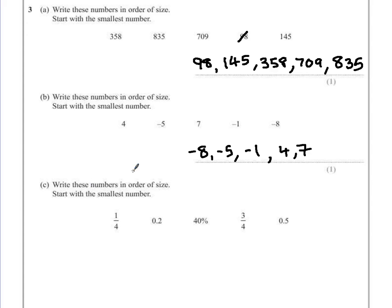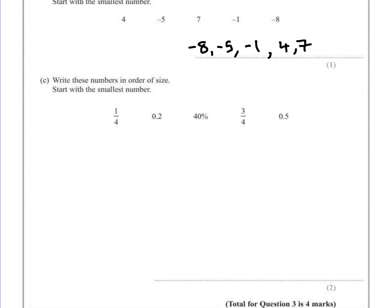Part C. Write these numbers in order of size. Start with the smallest number. Now this question is worth two marks. The reason for this is that we have to make sure that we can compare each of these fairly. The easiest way to do that is to turn them all into decimals.